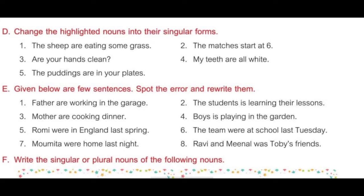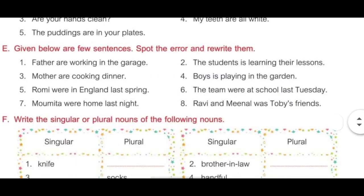Question number 8: Ravi and Minal was Toby's friend. Ravi and Minal — two names are there, so it is plural. We cannot use was here; we will use were. So the answer will be: Ravi and Minal were Toby's friends.